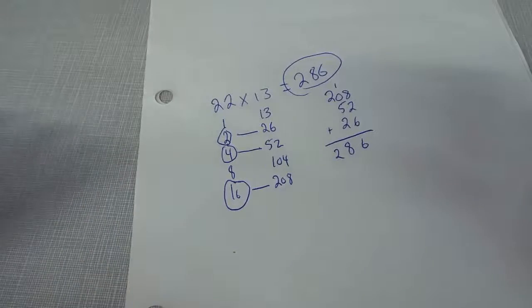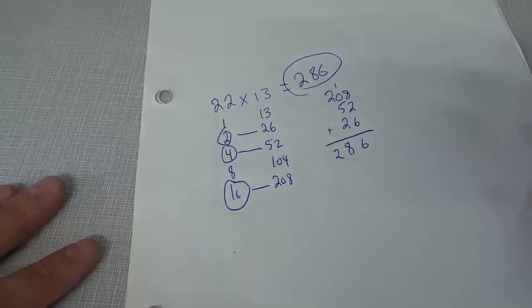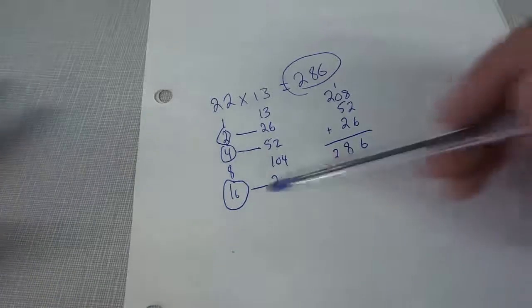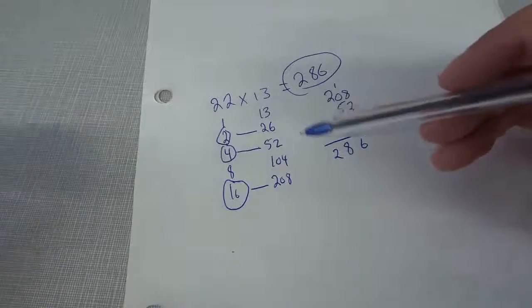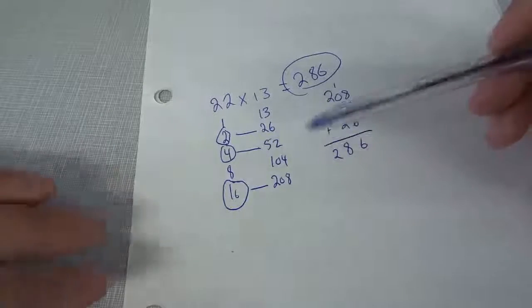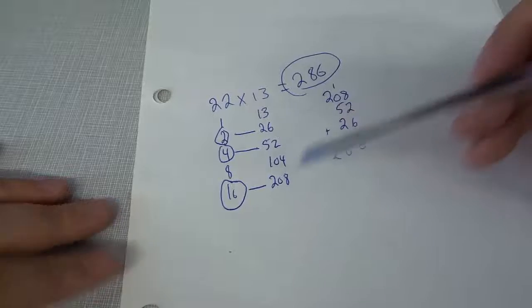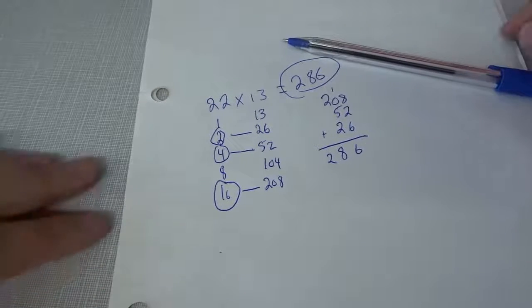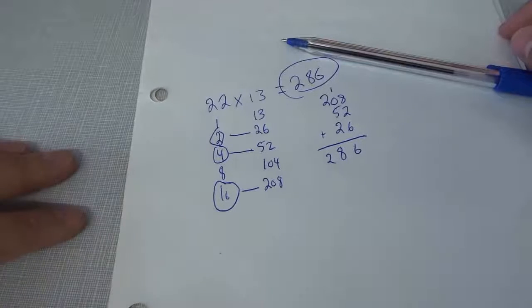There you go. That is how to multiply two-digit numbers extremely quickly without a calculator. And you don't really need any math tricks. You're not really multiplying anything. You're actually just adding, you're doubling. So you are multiplying slightly, but you're just adding numbers together. So it's really easy to do. And that's basically it. I really hope that you've enjoyed this little math trick tutorial.